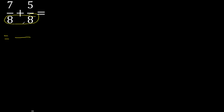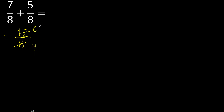Here equal, therefore here 8. Here 7 plus 5 is 12. This can be simplified because it can be divided by the same number — divided by 2. 12 divided by 2 is 6. 8 divided by 2 is 4. This can be divided by 2 again, divided by 2. Cannot be simplified further.